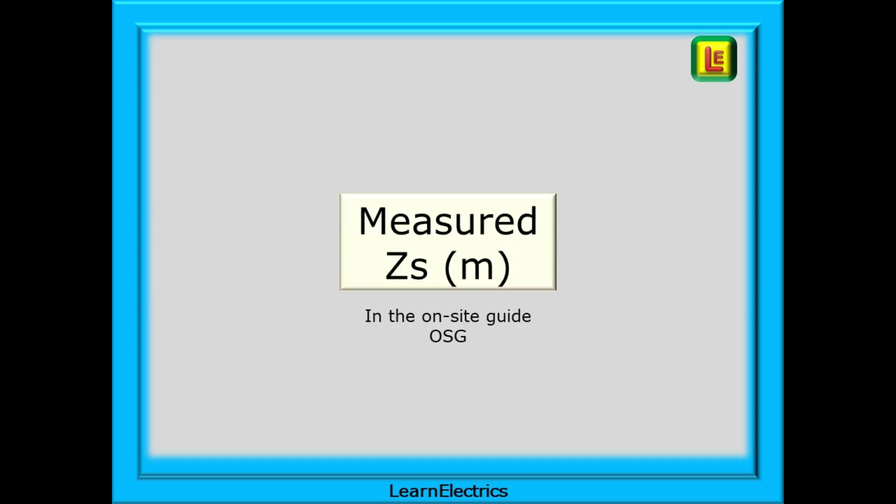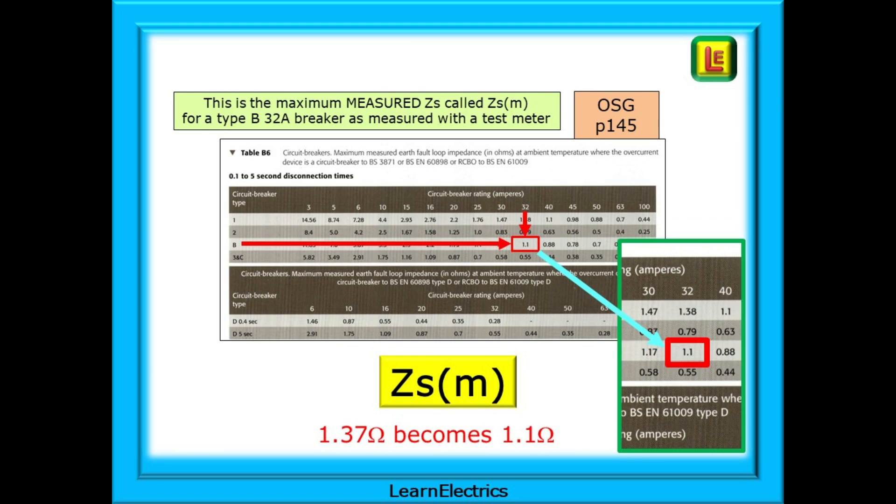Now we can go to step 3 and apply the rules for finding the measured ZS or ZSM. Shown here is the maximum measured ZS called ZSM for a circuit breaker as measured with a test meter. This is the maximum reading that we should expect to measure when on site and testing a circuit if the circuit is protected by a type B 32 amp circuit breaker or RCBO. And the maximum ZS has reduced further from 1.37 ohms to 1.1 ohms. Why?